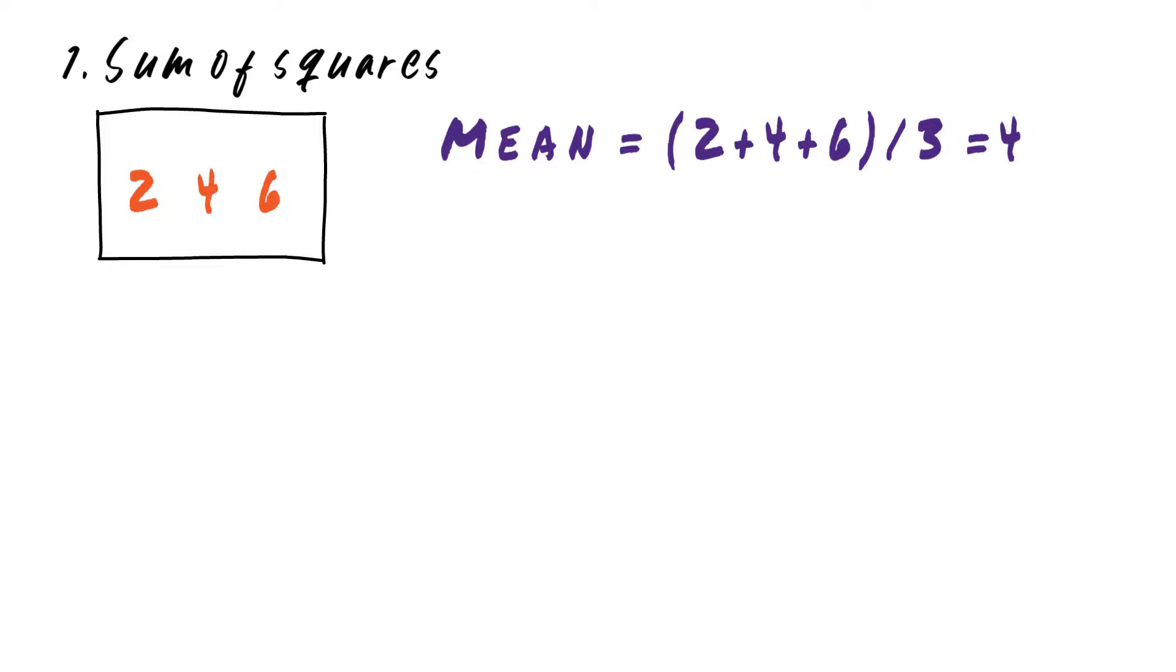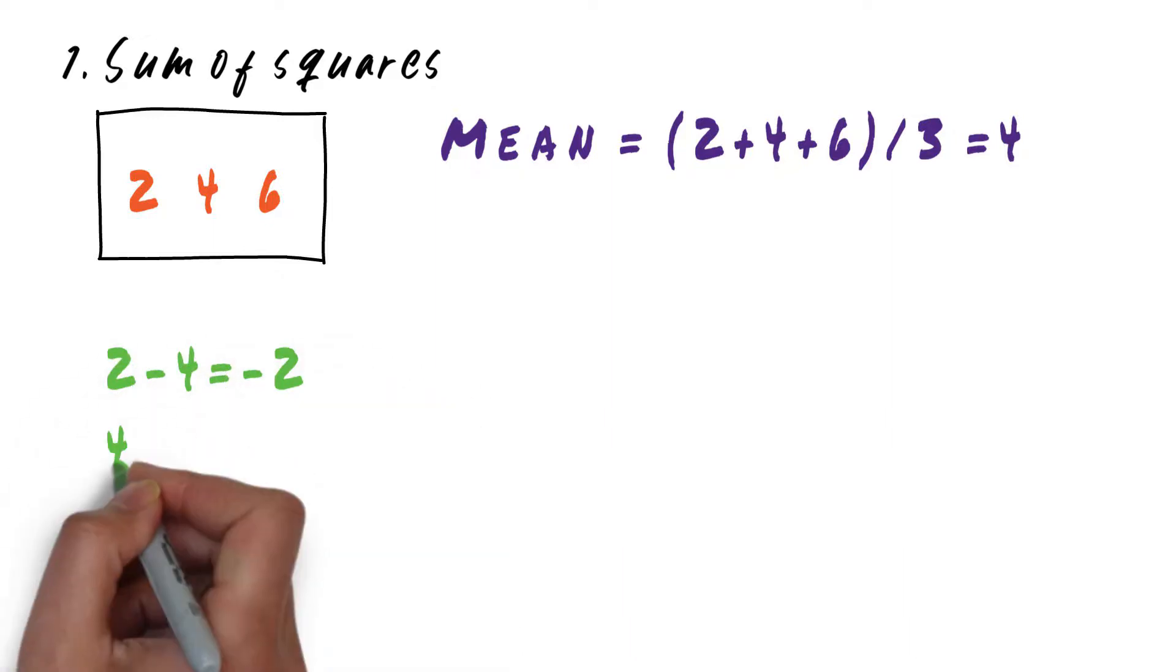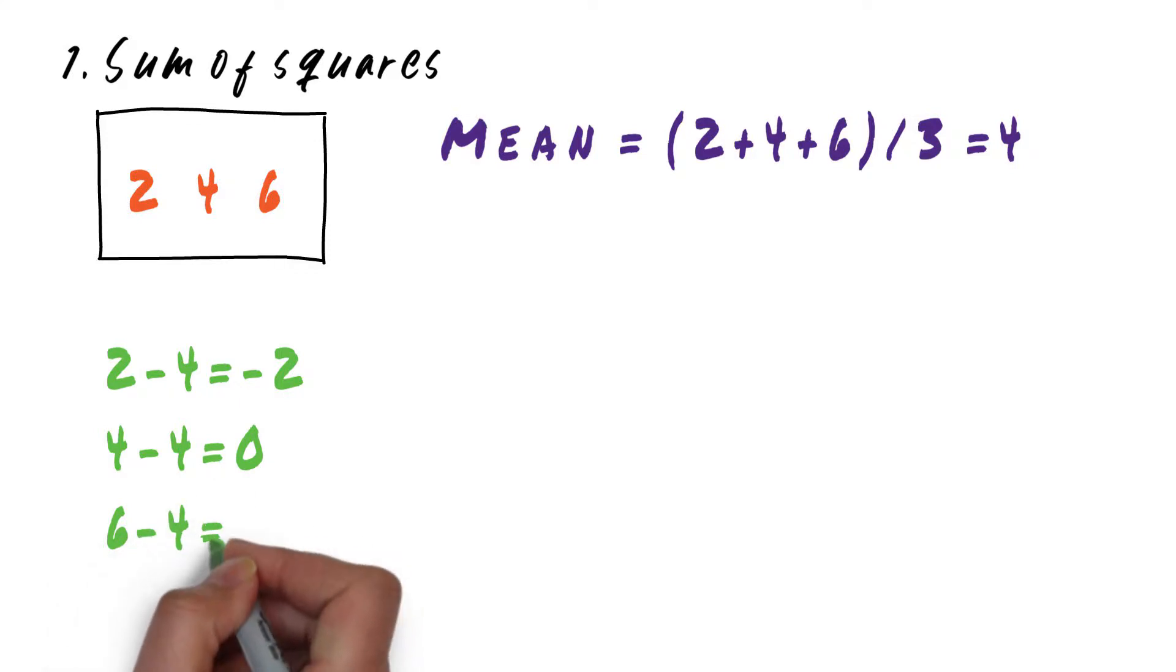When it comes to dispersion we want to know how close or far the data lies from the mean. So to do that we will subtract mean from every data point and end up with minus 2, 0 and 2.